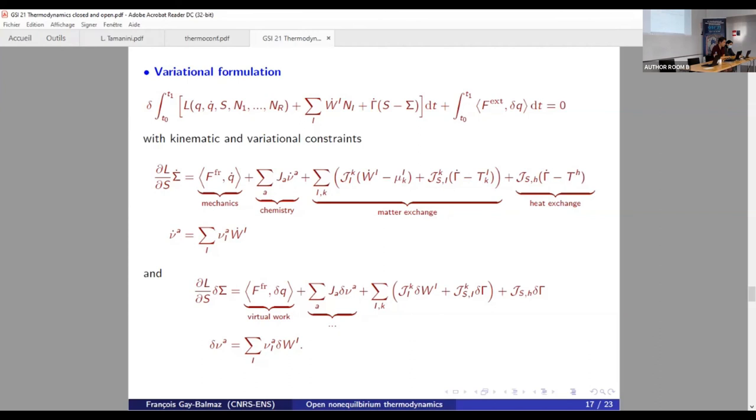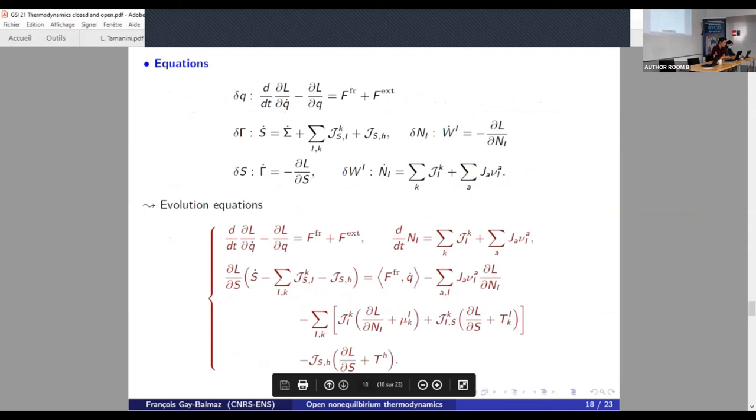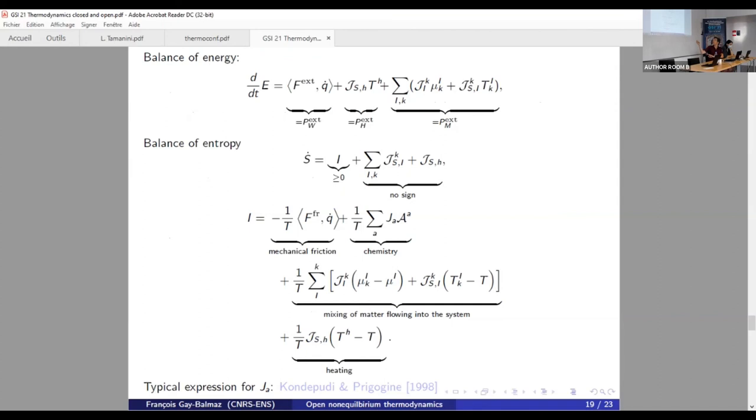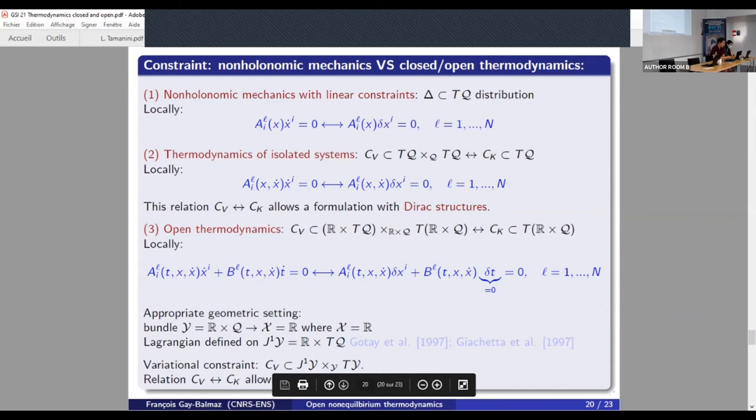And as I said, this seems ad hoc. So these are the equations. And for instance, we get the expression of the entropy production directly, as written here. For instance, you see here the entropy production associated to chemistry and to heating, matter flow, etc.